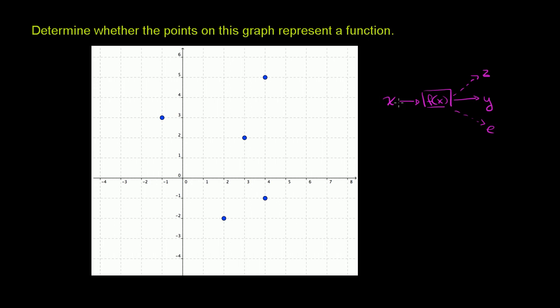This would not be a function, because it's not clear if you input x what member of the range you're going to get. In order for it to be a function, it has to be very clear. For any input into the function, you have to be very clear that you're only going to get one output.